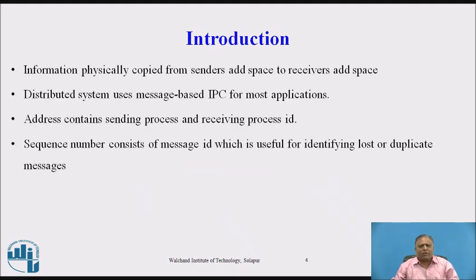Information is physically copied from the sender address space to the receiver address space. Distributed systems use message-based inter-process communication for most applications. The address contains sending process ID and receiving process ID, and a sequence number consisting of a message ID, which is useful for identifying lost or duplicate messages. Due to this sequence number or message ID, we can easily detect duplicate or lost messages in the message passing model.